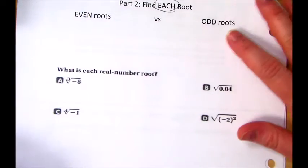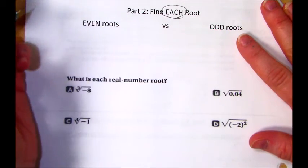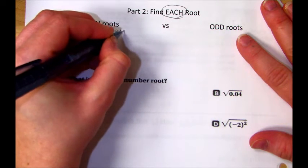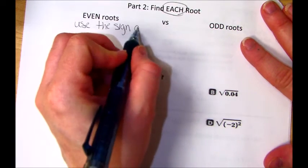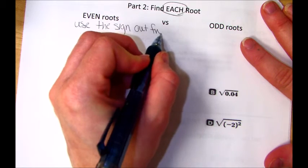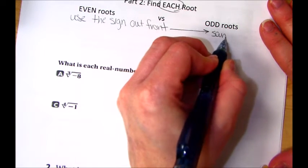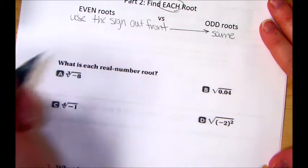This time it's just going to say find each root. Even roots, you just use the sign out front. And odd roots, same thing. You use the sign out front.